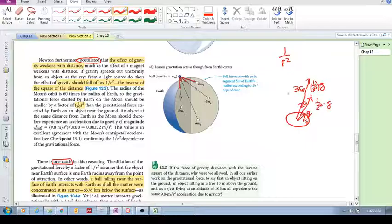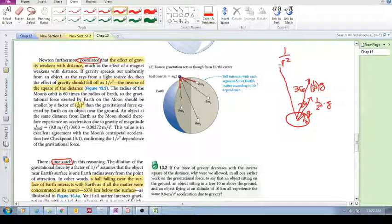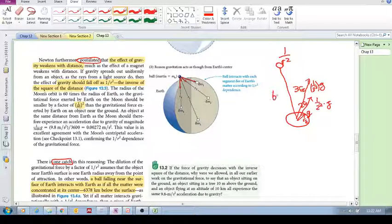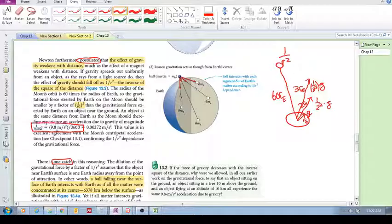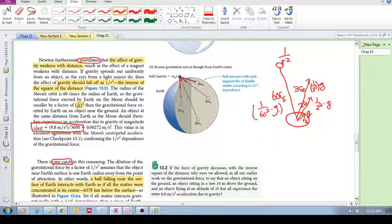And the same as we just saw, if you've got the moon over here, or any object that is at 60 times the radius of Earth, then gravity will drop off by 1 over 60 squared, 1 over 60 squared times G.